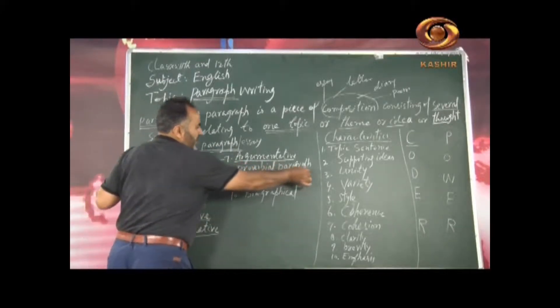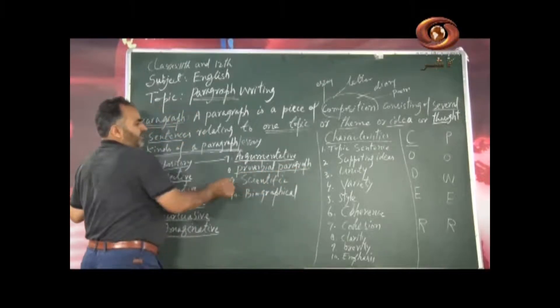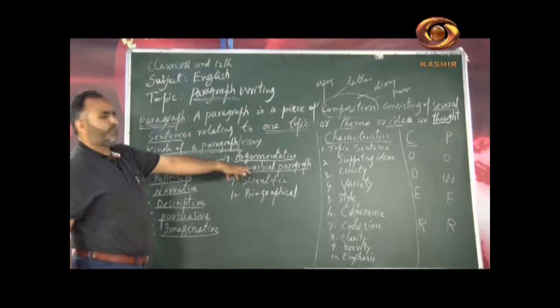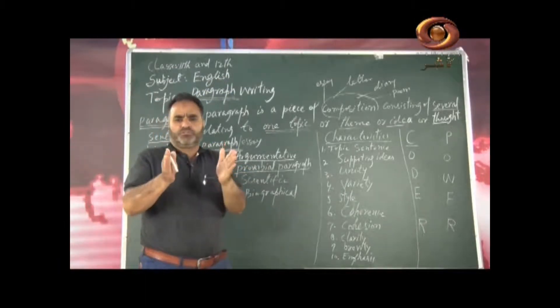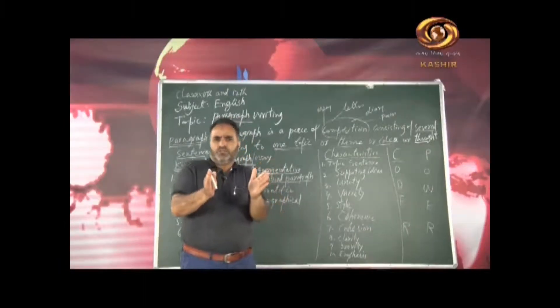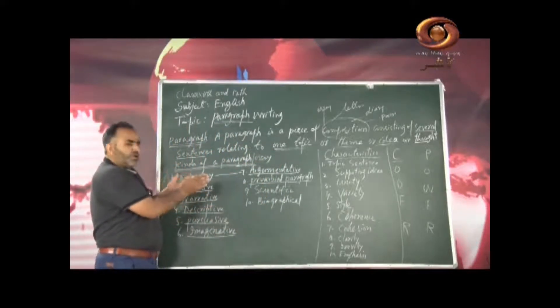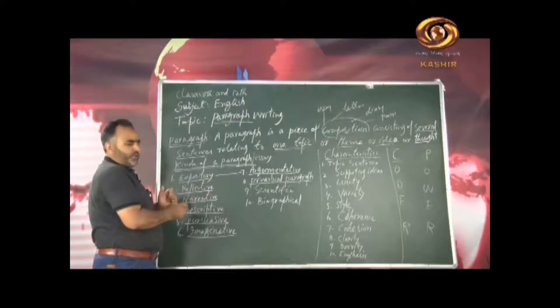Then we can have a proverbial paragraph. Usually you get in 11th or in 12th class, you get this kind of paragraph proverbial. That is union is strength. For example, health is wealth. Rome was not built in a day. Knowledge is power. So you have proverbial type of paragraphs.